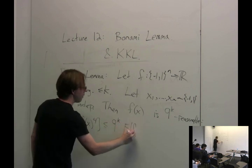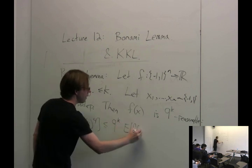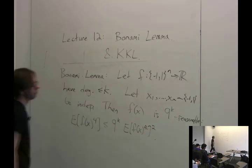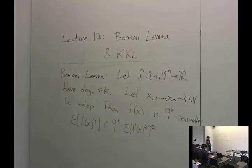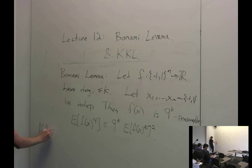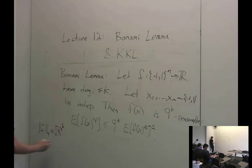Or if you want to take the fourth root of this inequality, you can write it as the fourth norm of f is at most (√3)^k times the two-norm.